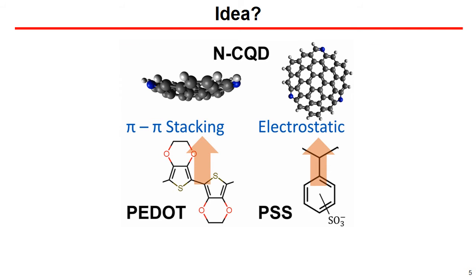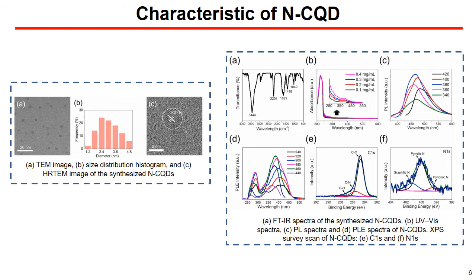The idea is because the nitrogen-doped carbon quantum dots can interact with both PDCPD and the perovskite via pi-pi stacking or electrostatic interaction. You can see information about the characteristics of the carbon quantum dots. It's quite general and similar to previous papers.